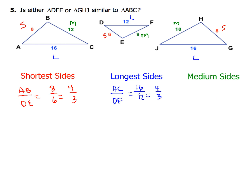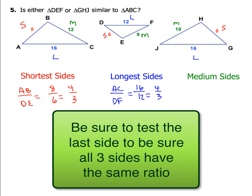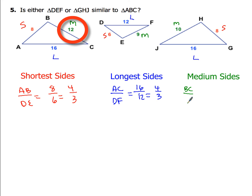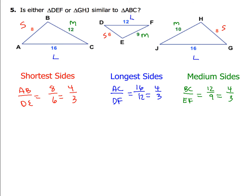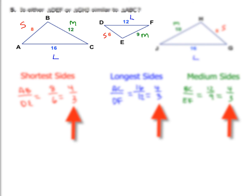Here's a common mistake: people see that the first two ratios are the same and assume the medium side must match too. Always take it to that last step, because standardized tests try to catch you leaving it out. The last side, BC to EF, has a ratio of 12/9. Since 3 is the GCF, 12 ÷ 3 = 4 and 9 ÷ 3 = 3, giving 4/3. Now compare all three ratios.